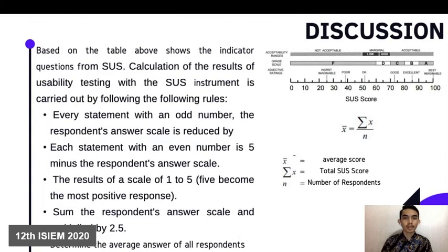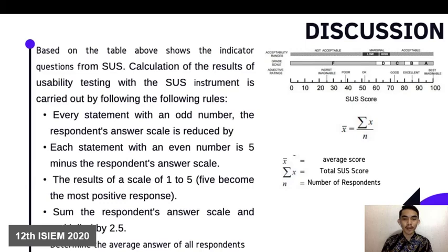Based on the table above, the color coding shows the questions from SUS. The calculation of usability testing results follows these rules: for every statement with an odd number, the respondent's answer scale is reduced by one; for statements with an even number, five minus the respondent's answer scale is used. The result uses a scale of one to five, with five being the most positive response. The scores are summed and multiplied by 2.5 to determine the final score for each respondent.